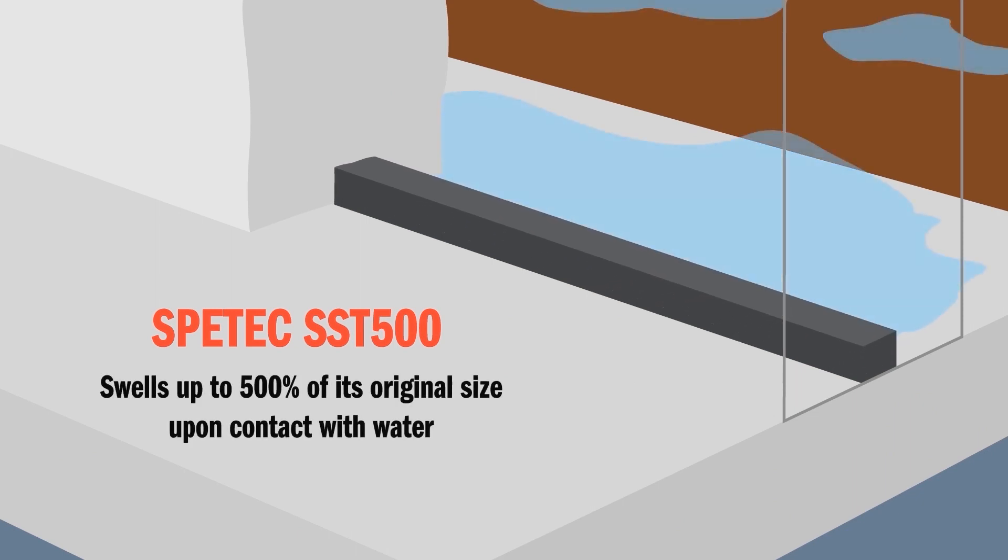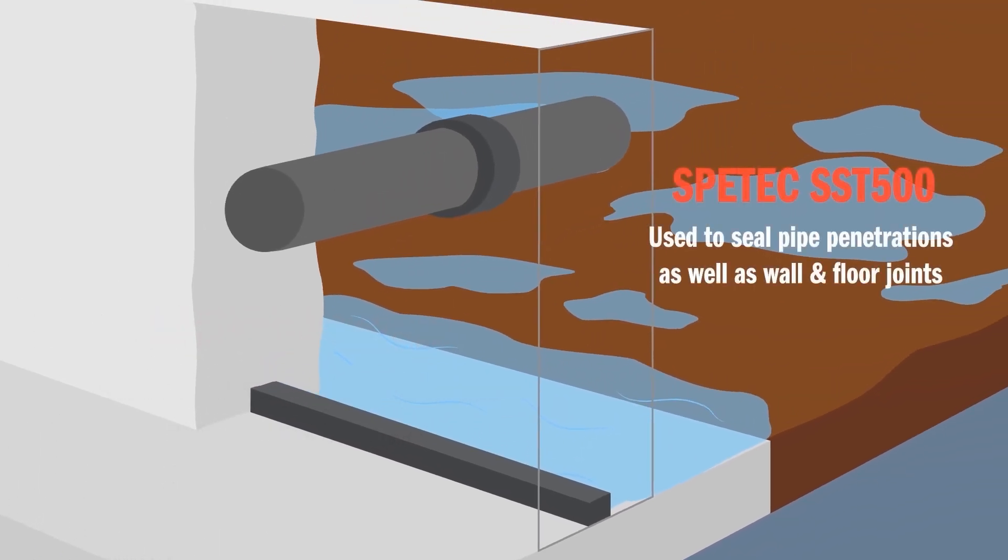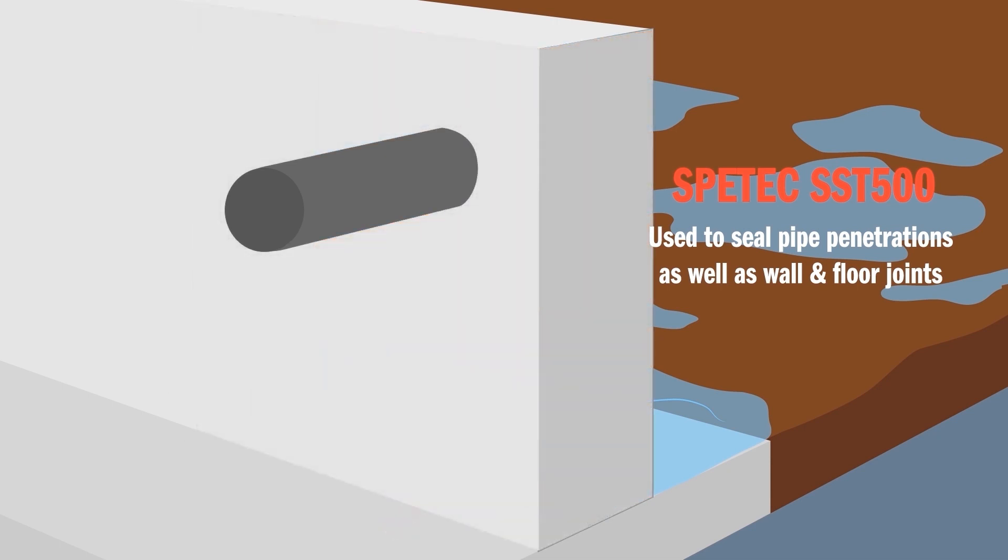It swells up to 500% of its original size upon contact with water and is used to seal pipe penetrations as well as wall and floor joints. In this case it is installed inside the wall, floor and pipe joints and therefore are not visible after construction is completed.